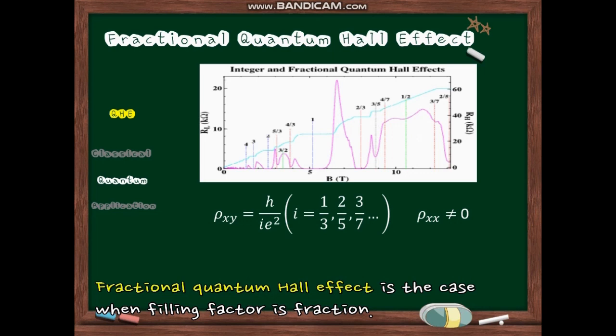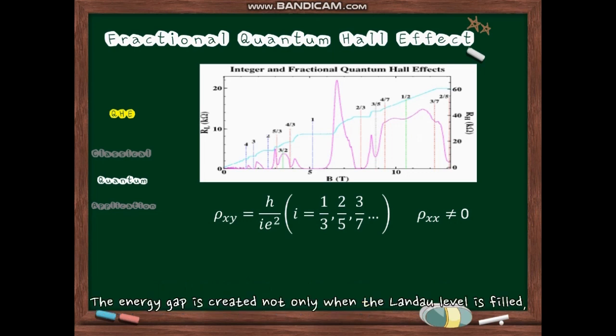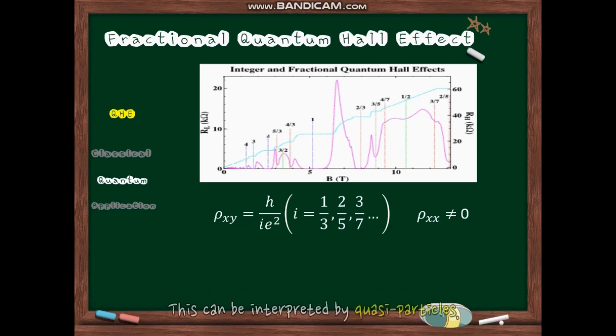Fractional quantum Hall effect is the case when filling factor is a fraction. The energy gap is created not only when the Landau level is filled, but also when it is partially filled. This can be interpreted by quasiparticles.